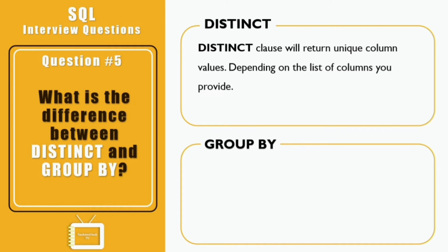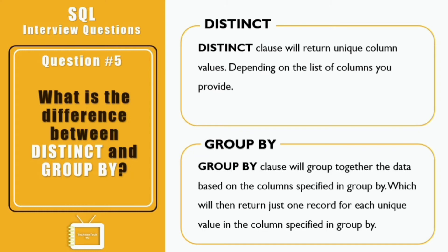Question five: what is the difference between DISTINCT and GROUP BY? DISTINCT returns unique column values based on the list of columns provided — it fetches the unique combination of values for all those columns. GROUP BY groups data based on the specified column and returns one record for each unique value. GROUP BY can also fetch unique records, but its main purpose is to perform aggregation using aggregate functions like MIN, MAX, COUNT, SUM, and AVG based on the GROUP BY column values.